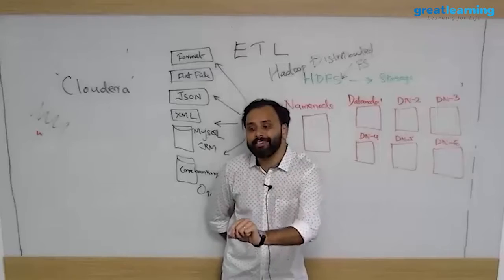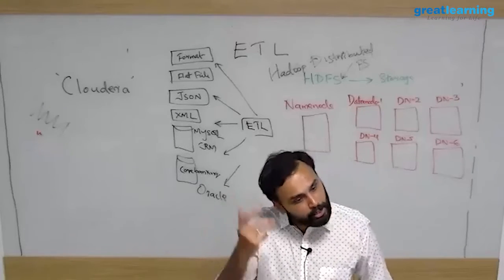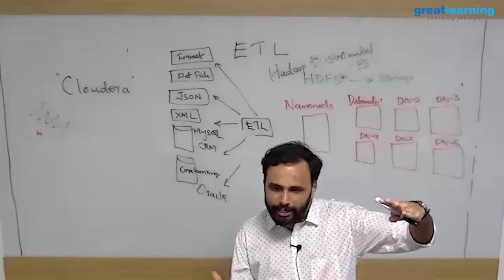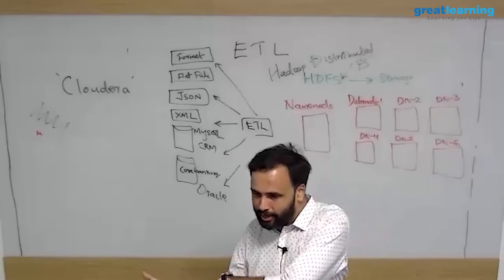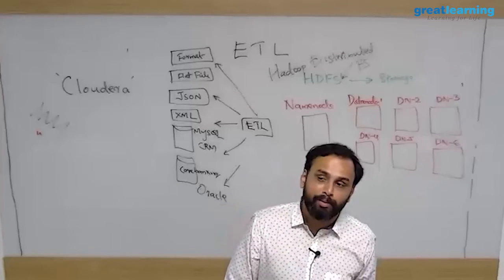But on the file system, editing is not possible. Appending is possible. Appending is always possible. I have a file, I want to append the data, that's okay because you are just adding in the end. But I'm just reading the hundredth row and edit, that is not possible.